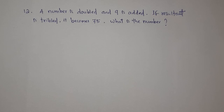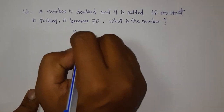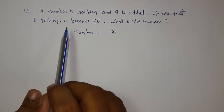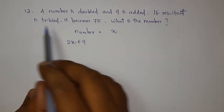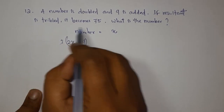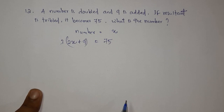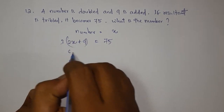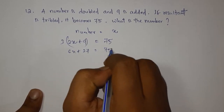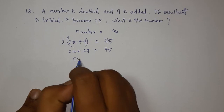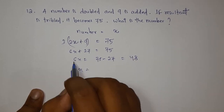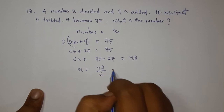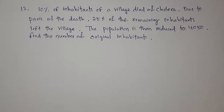Next question: a number is doubled and 9 is added; if the result is trebled it becomes 75. What is the number? Let the number be x. Double the number and add 9: 2x plus 9. Trebling this: 3 into (2x plus 9) equals 75. So 6x plus 27 equals 75. Subtracting 27: 6x equals 48. So x equals 8. The number is 8.